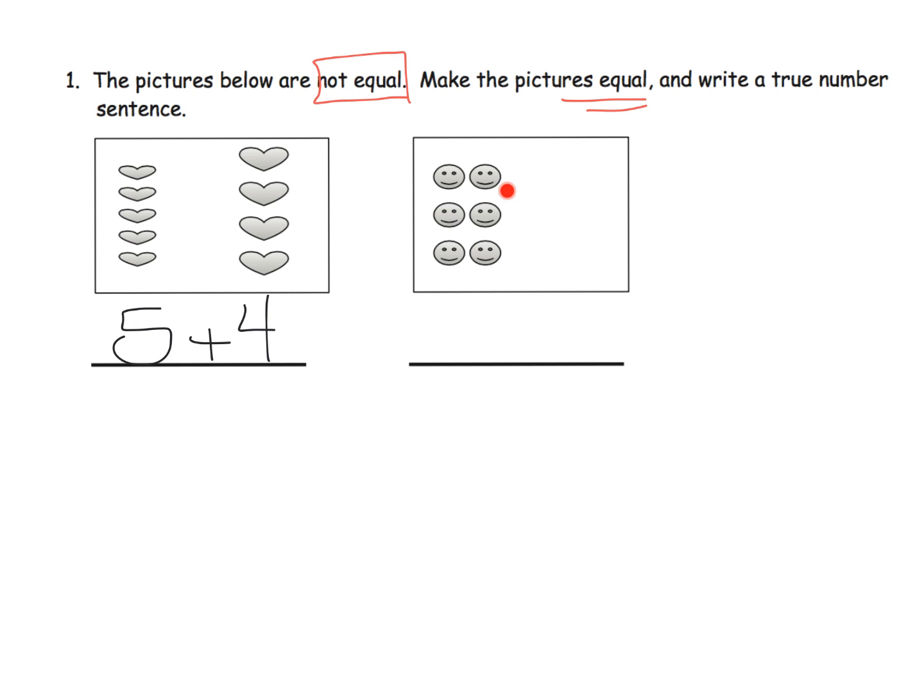And I happen to see that we have six smileys. So I can say, well, the way we're going to make it true or equal is I'm going to add three more smileys. So our expression on the right is going to be six plus three. And we now have an equal or a true statement.